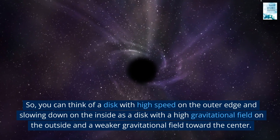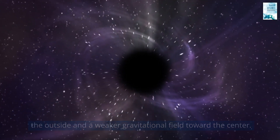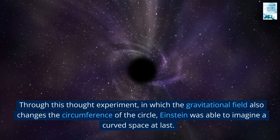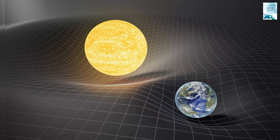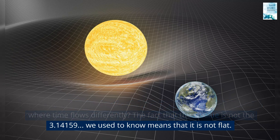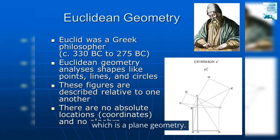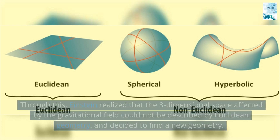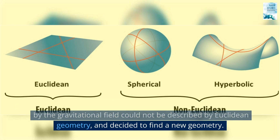You can think of a disc with high speed on the outer edge and slowing down on the inside as a disc with a high gravitational field on the outside and a weaker gravitational field toward the center. Through this thought experiment — in which the gravitational field also changes the circumference of the circle — Einstein was able to imagine a curved space at last. A disc whose pi value is not 3.14159 and where time flows differently is not flat. The pi value we used to know is derived from Euclidean geometry, which is a plane geometry. Through this, Einstein realized that the three-dimensional space affected by the gravitational field could not be described by Euclidean geometry, and decided to find a new geometry.